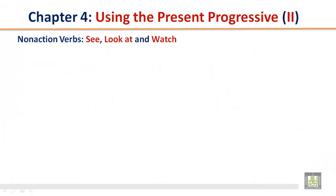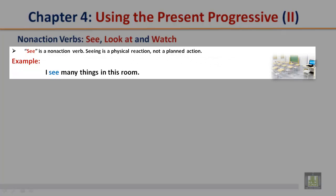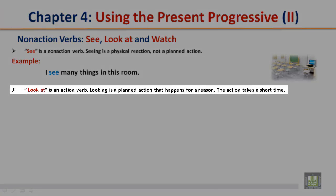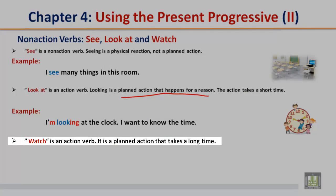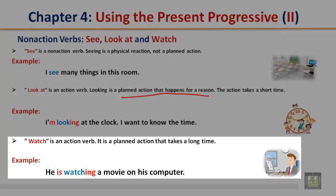Non-action verbs — see, look at, and watch. 'See' is a non-action verb; seeing is a physical reaction, not a planned action. Example: I see many things in this room. 'Look at' is an action verb; looking is a planned action that happens for a reason and takes a short time. Example: I'm looking at the clock — I want to know the time. 'Watch' is an action verb — a planned action that takes a long time. Example: He is watching a movie on his computer.